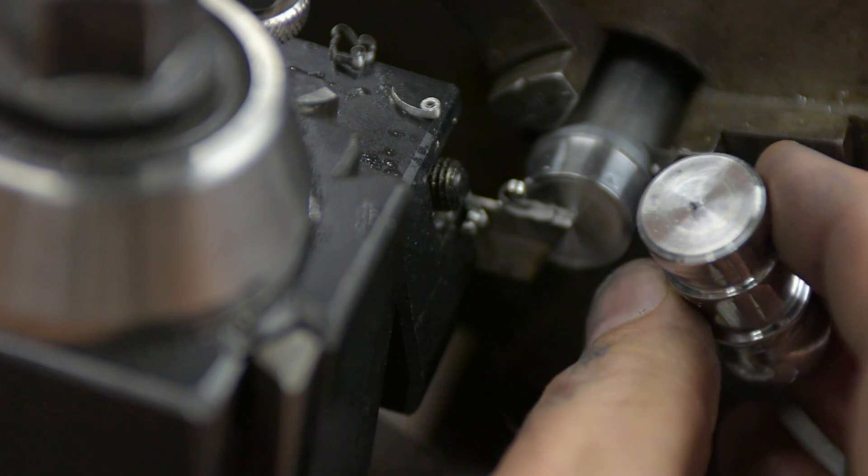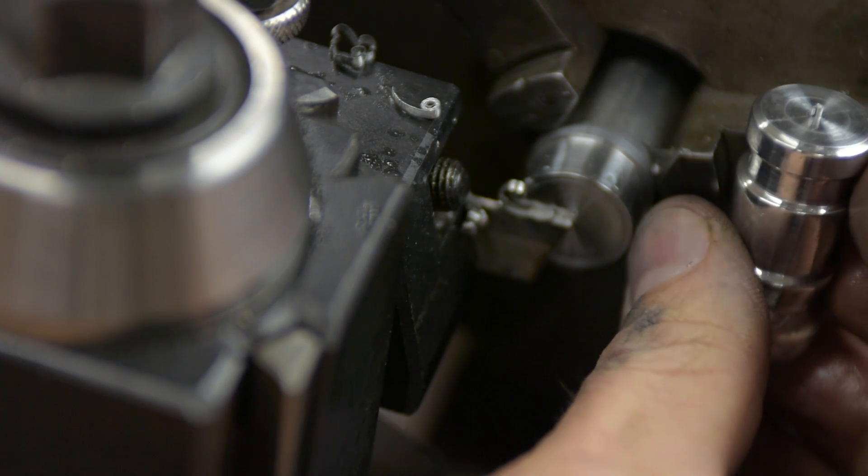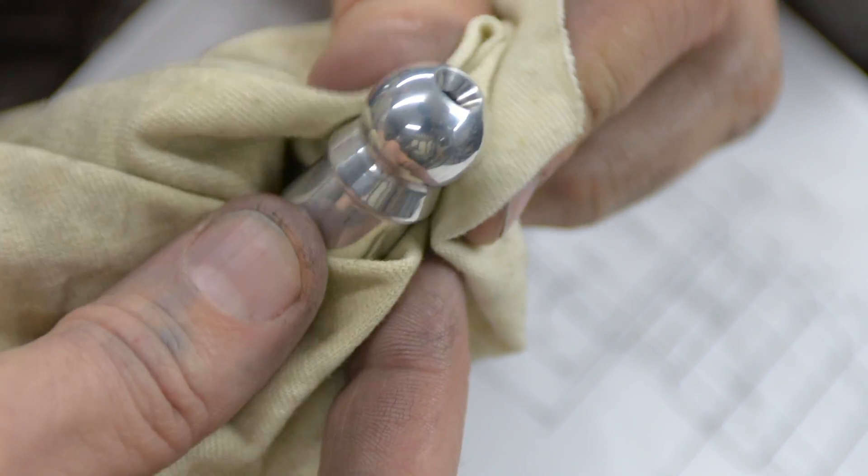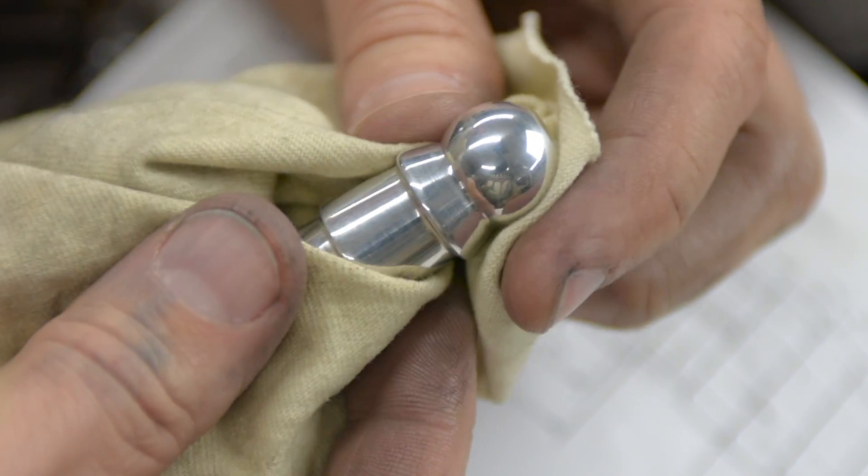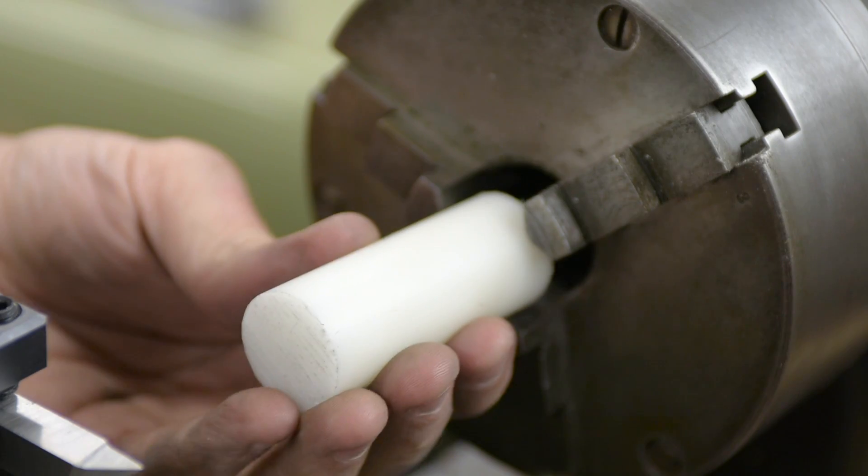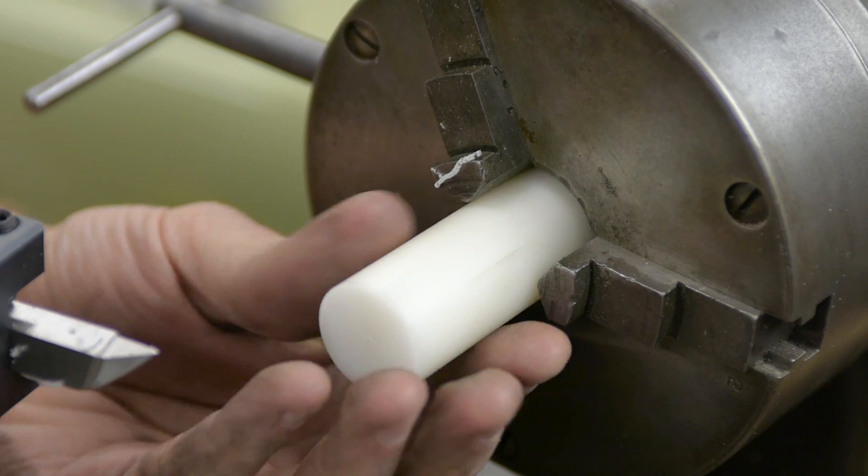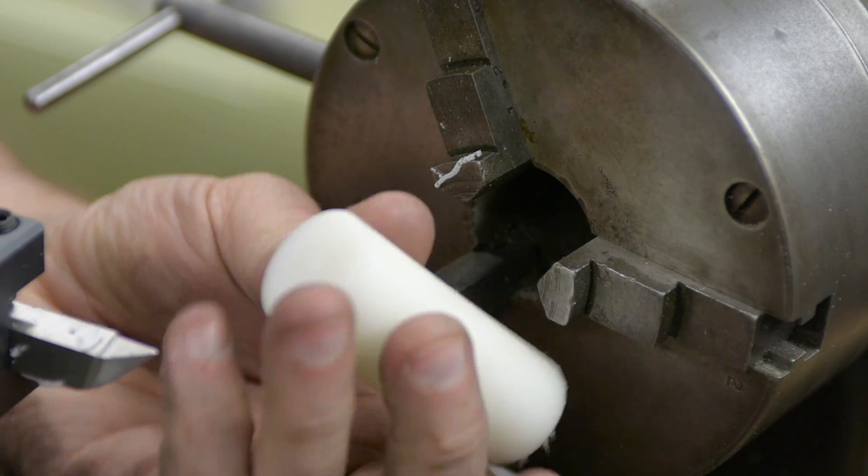Now, to bore out the inside, I have to flip this part around and drill it from the other end. In order to hold this securely without marring this brand new shiny surface I just made, I'm going to make a nylon insert that fits inside the chuck. I'd like to thank Tony Rouleau for this idea. I saw him do something similar with the brass piece he was working on.